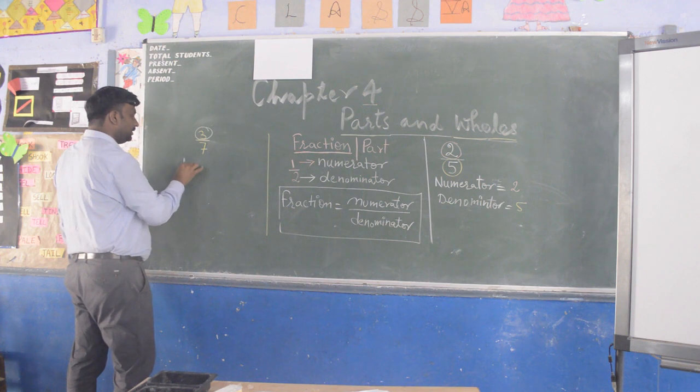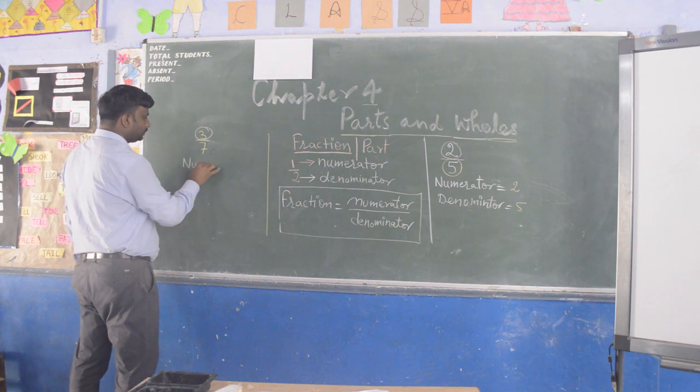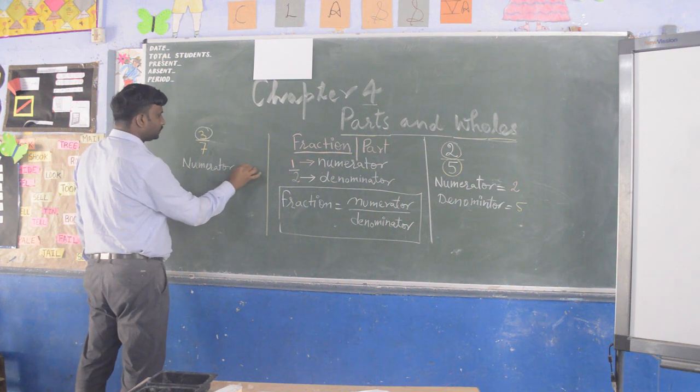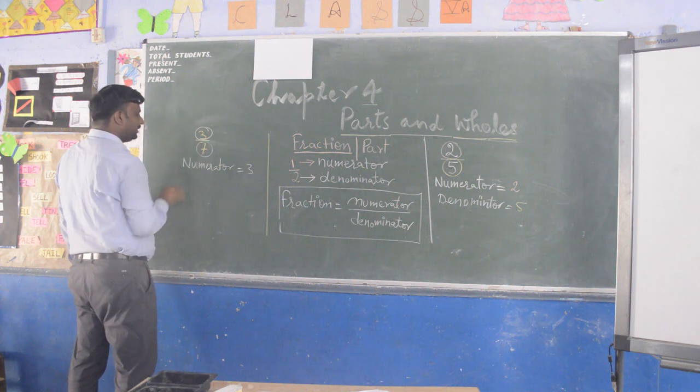This 3 is called as numerator. And this 7 is called as denominator.